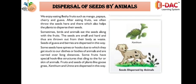Next is dispersal of seeds by animals. We enjoy eating fleshy fruits such as mango, papaya, cherry, and guava — these are all favorites. After eating fruits, we often throw the seeds here and there, which also helps plants to disperse their seeds. When we eat fruits we throw off the seeds in different places, which helps new plants grow.